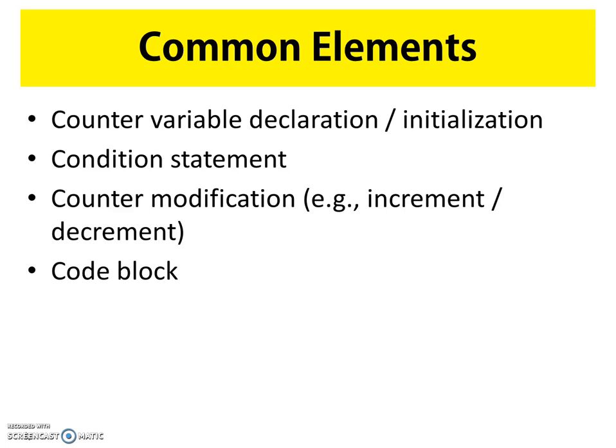The next common element is counter modification, used to adjust the value of the counter variable. This is necessary so that eventually the condition statement will test to false and the loop will stop. Counters are often incremented or decremented by one, but you can set the modification to whatever your program needs. Finally, we have the code block — the block of Java code that runs if the condition statement tests true. If false, we skip the code block and move on.